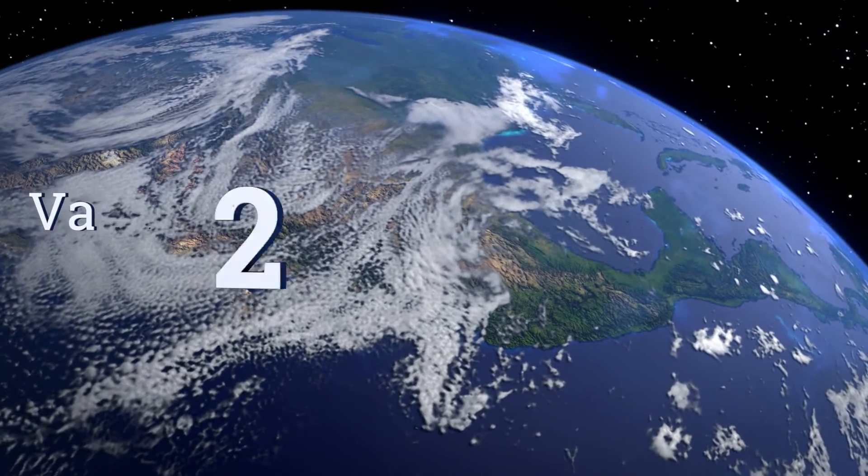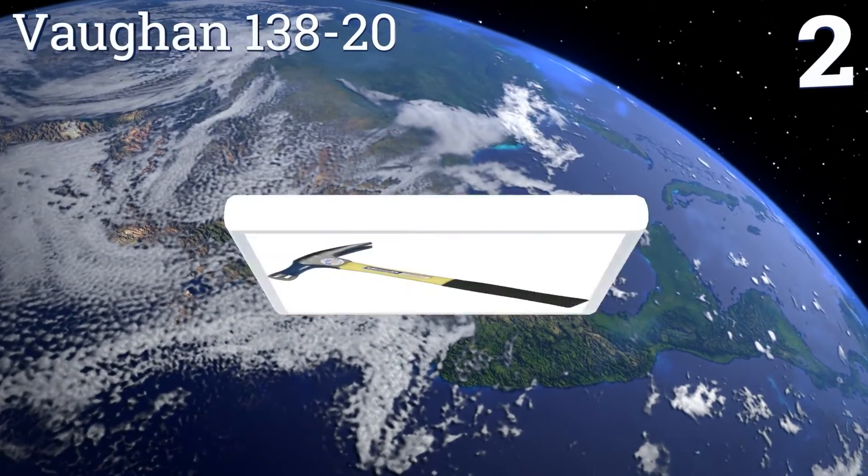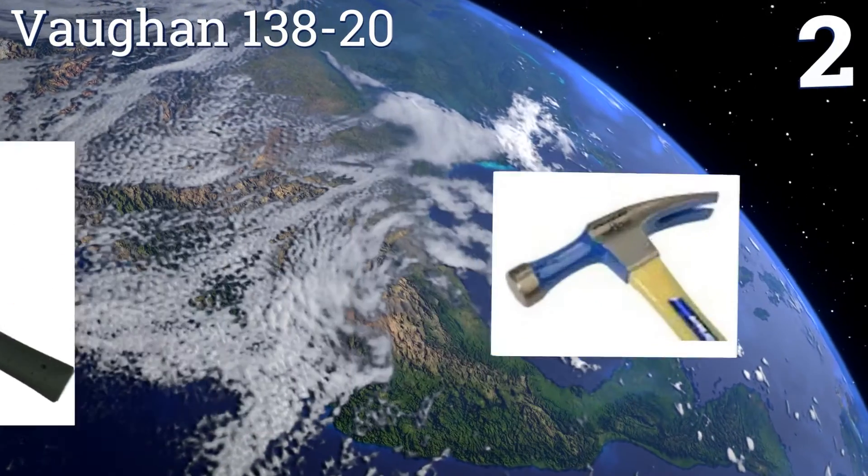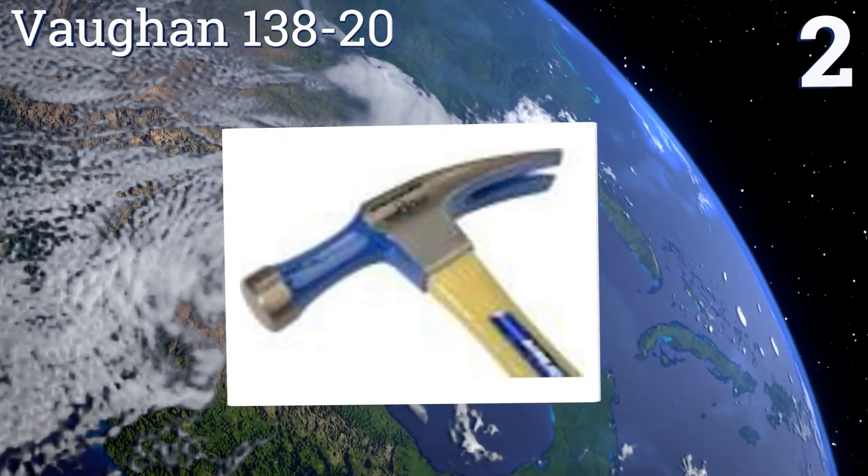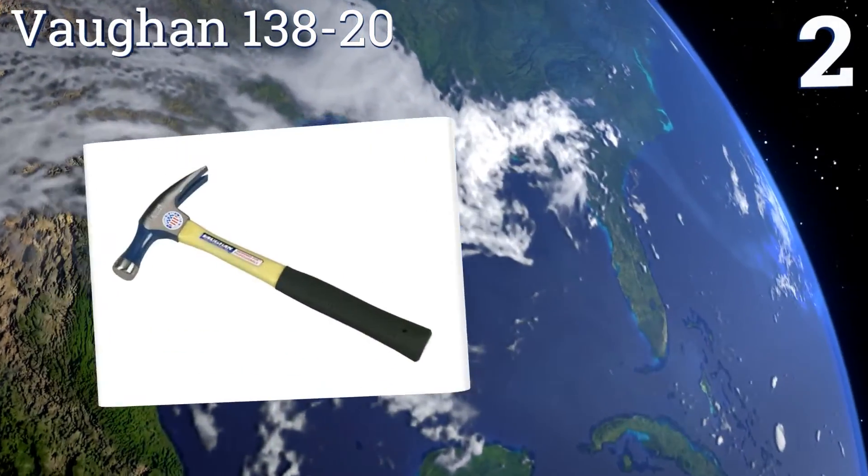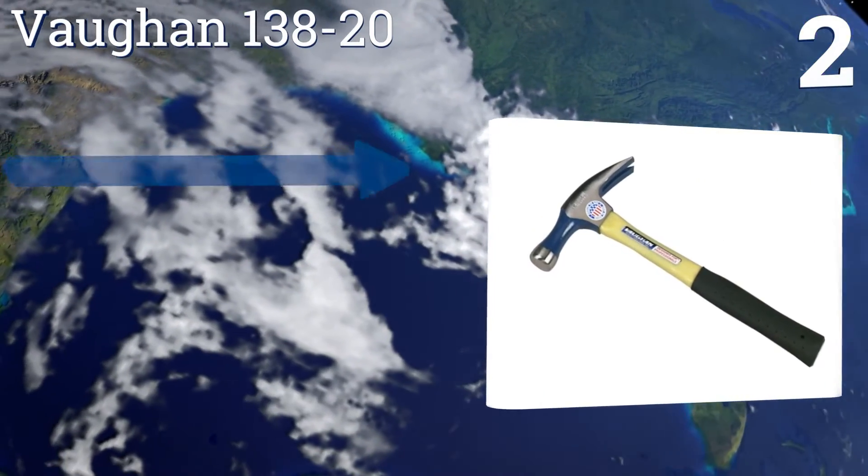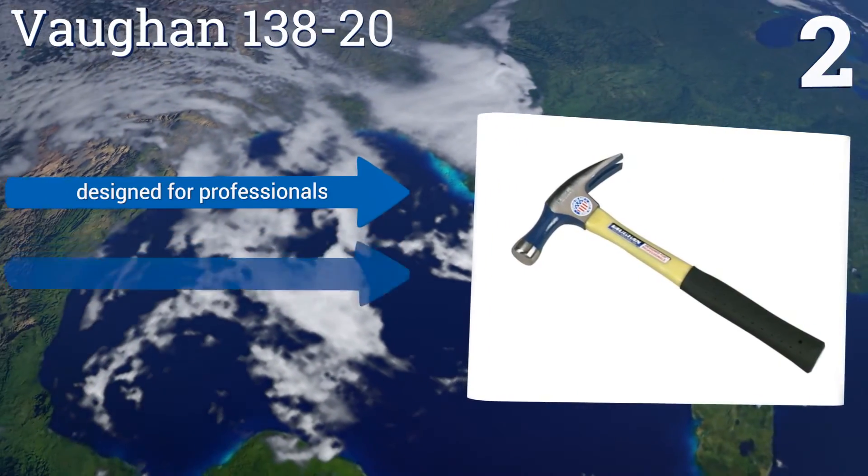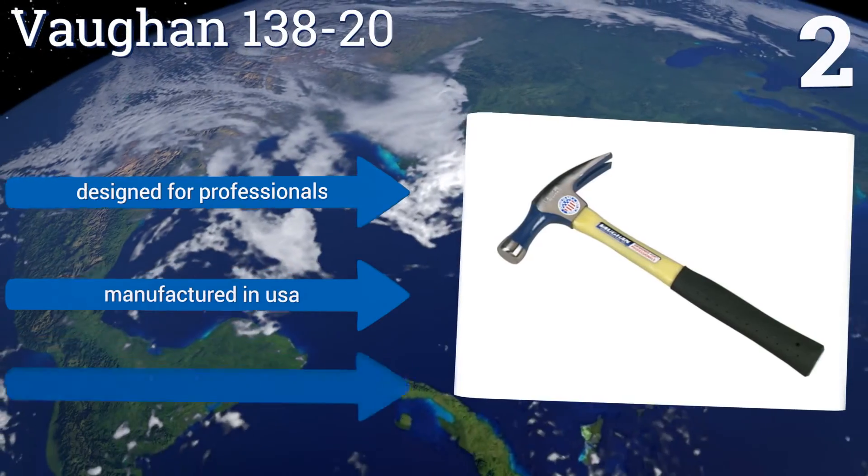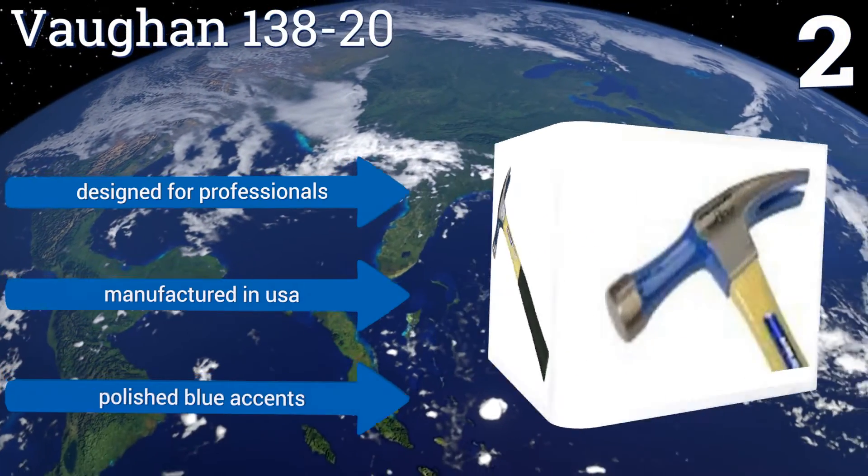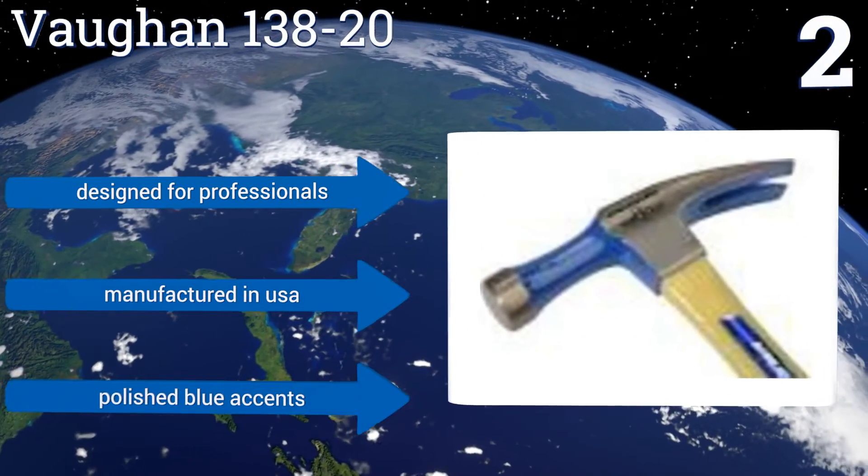At number two, with an eight ounce head for better nail driving and slip resistant rubber grip for greater control, the Vaughan 138-20 can be an electrician's best friend. The handle is made of tough fiberglass and has a hollow core that helps it absorb even the most jarring of shocks. This one's designed for professionals and manufactured in the USA with polished blue accents.